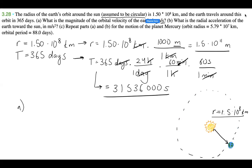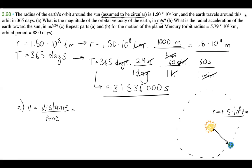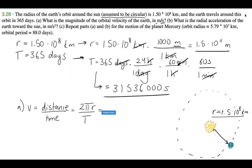We know that speed is equal to distance over time. And we know that the distance for a circular orbit is going to be 2πr — that's the circumference of a circle — which is the distance the Earth travels. And the time is going to be the period it takes to travel that distance. So now we just plug in our values: 2π times r over the period.